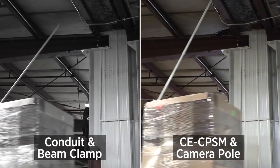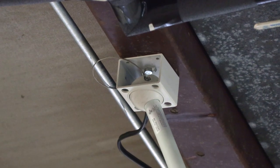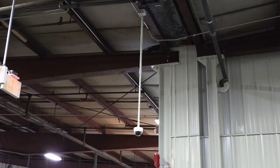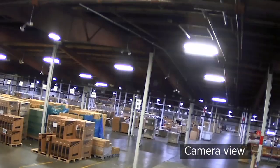Tired of replacing bent or broken pendant mounts? The CE-CP-SM swivel mount allows the camera pole to swing safely out of the way when struck. This mount is ideal for warehouses or other harsh environments where forklifts or rolling ladders may strike pendant-mounted cameras.